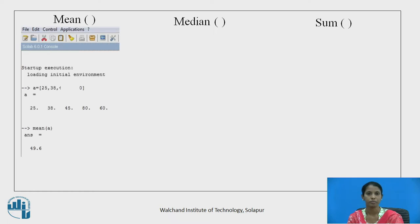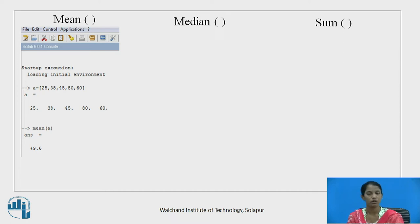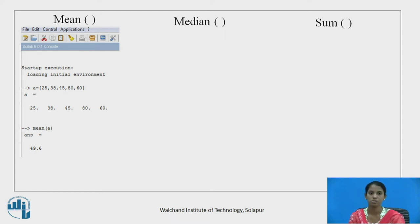First is mean. Let us assume vector A consists of five elements: 25, 38, 45, 80, and 60. To find out the mean or average of a vector, the statistical function mean is used. When we type mean(A), we get 49.6, which is the addition of all the elements divided by 5.